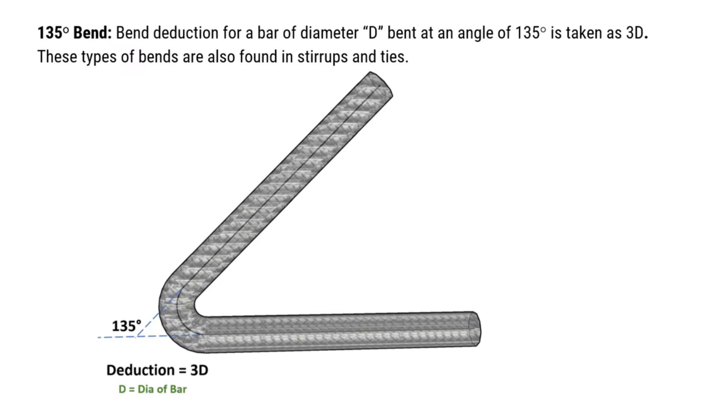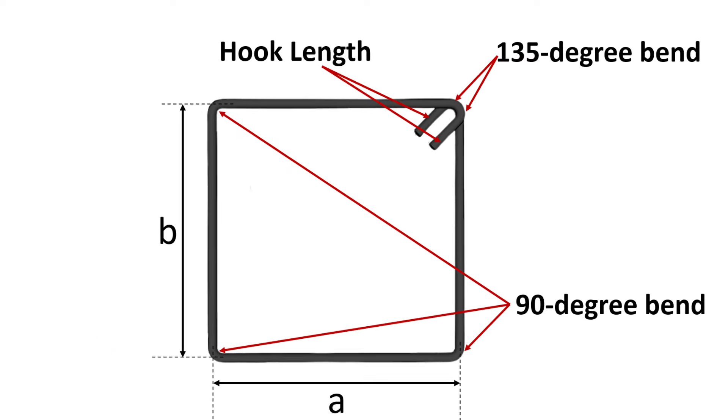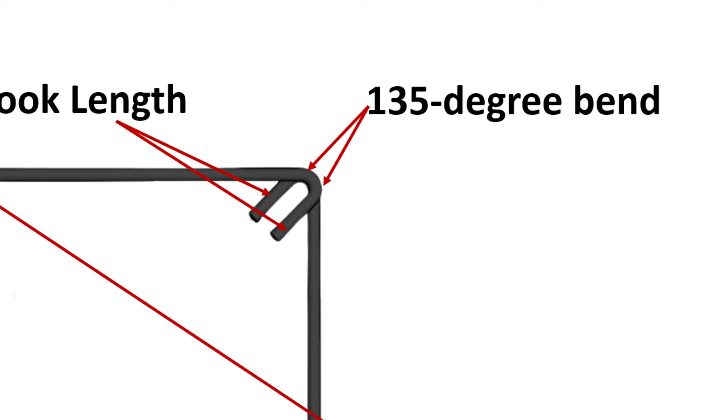In the case of a 135 degree bend, the deduction is taken as 3 times the diameter of the bar. These types of bends are also found in stirrups and ties.